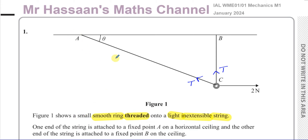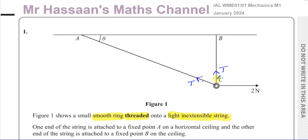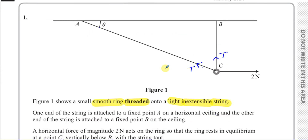The string is the same piece throughout, and the tension on both sides of the ring will be the same because the ring is smooth. The string is light, so the tension is the same at every point throughout. 'Inextensible' means the string cannot be stretched — any particle attached to it will have the same acceleration. One end is attached to fixed point A on the horizontal ceiling and the other end to fixed point B on that ceiling.